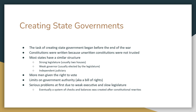To draft the constitution, the states all called conventions of their most leading citizens — all of whom supported the Revolution. They came up with a very similar structure, not that different from what they'd already had. There would be a very strong legislature with two houses: an upper house and a lower house. There would be a weak governor, usually elected by the legislature, usually elected annually to make them even weaker, and they were not given any real powers.